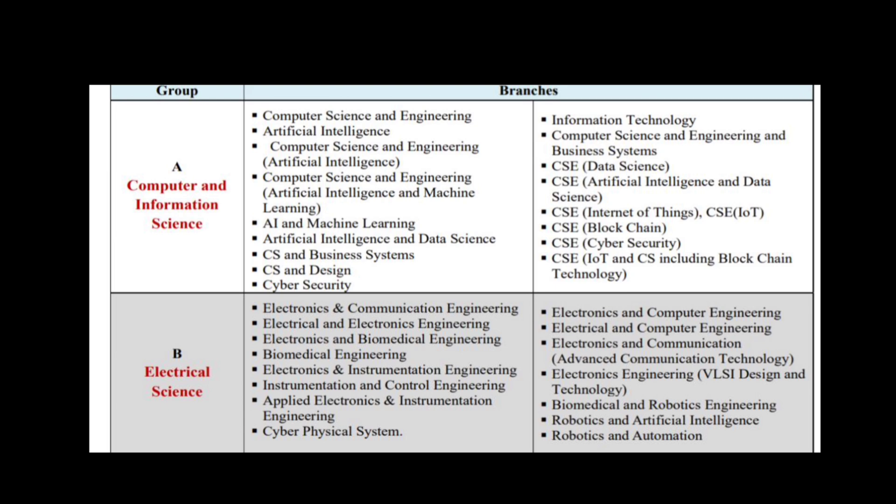Group A includes Computer Science and Information Science. Group A also covers Artificial Intelligence, Computer Science related branches — CS, Design, Cyber Security, and IT.